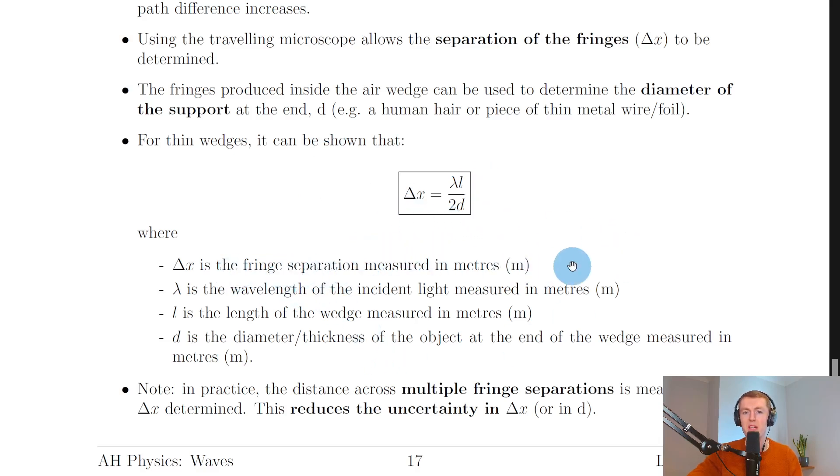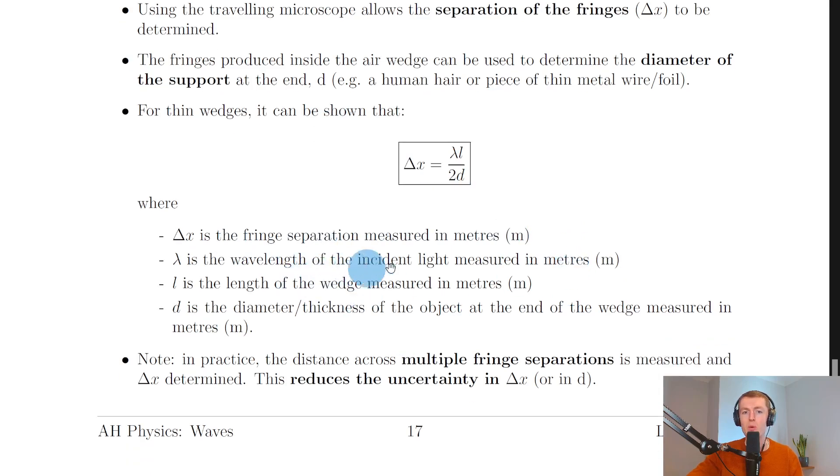Where Δx is the fringe separation measured in meters, λ is the wavelength of the incident light measured in meters, l is the length of the wedge measured in meters, and d is the diameter or thickness of the object at the end of the wedge also measured in meters.